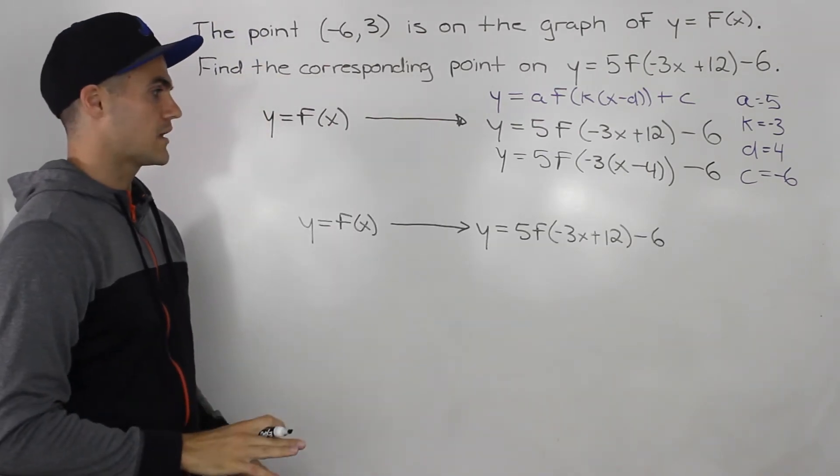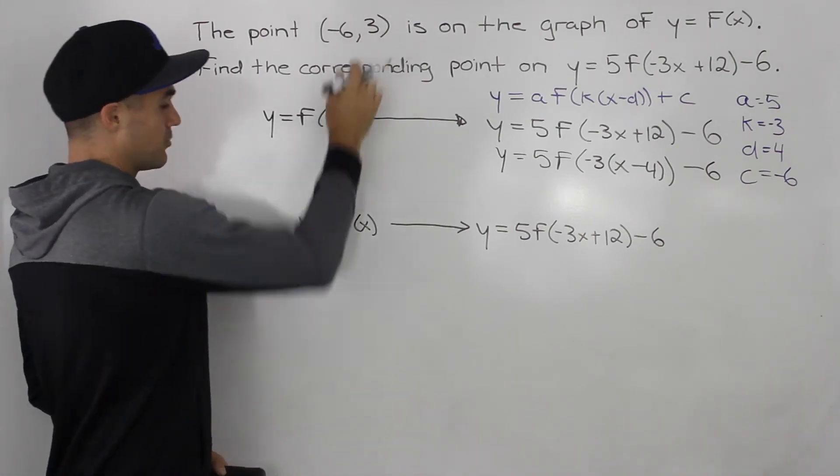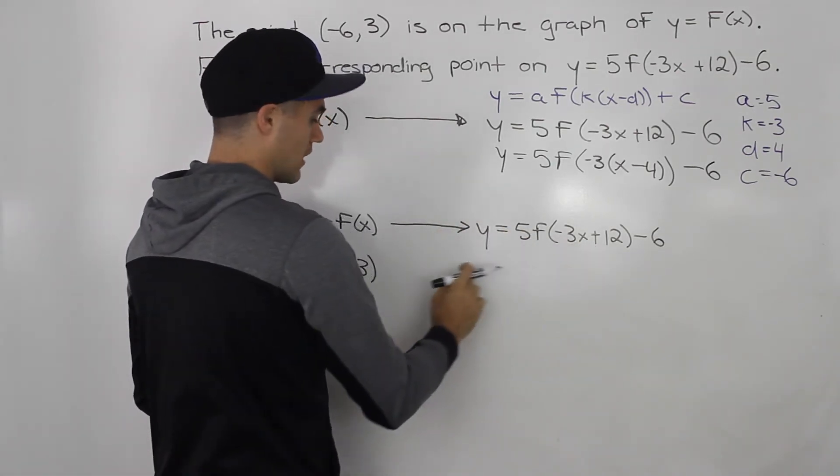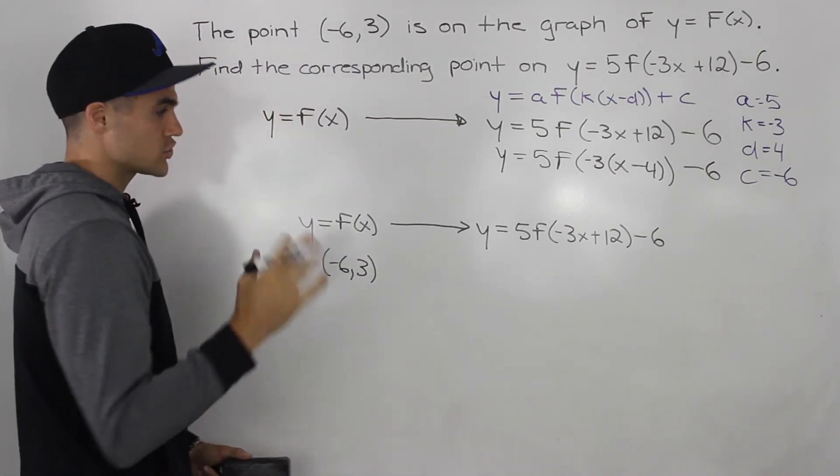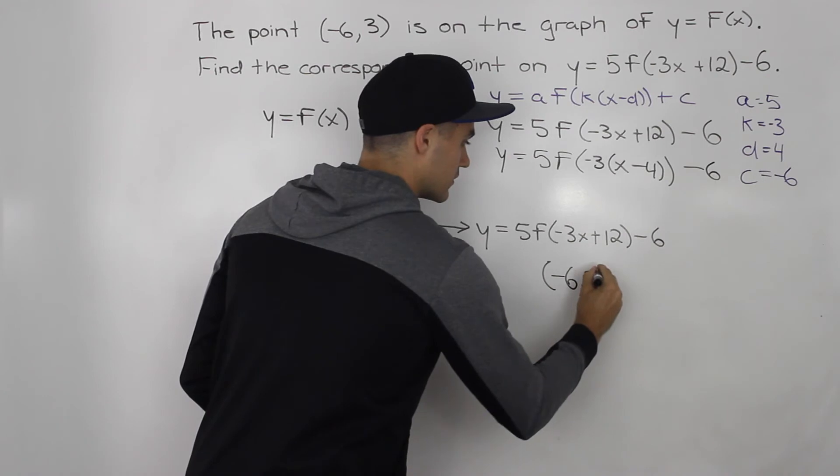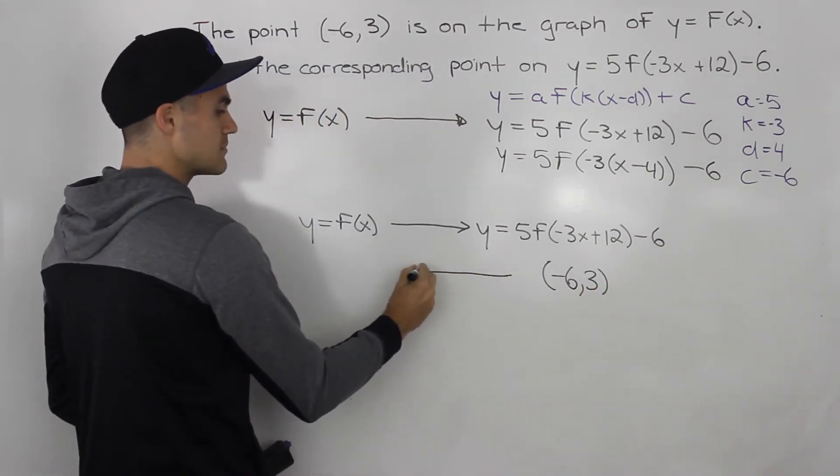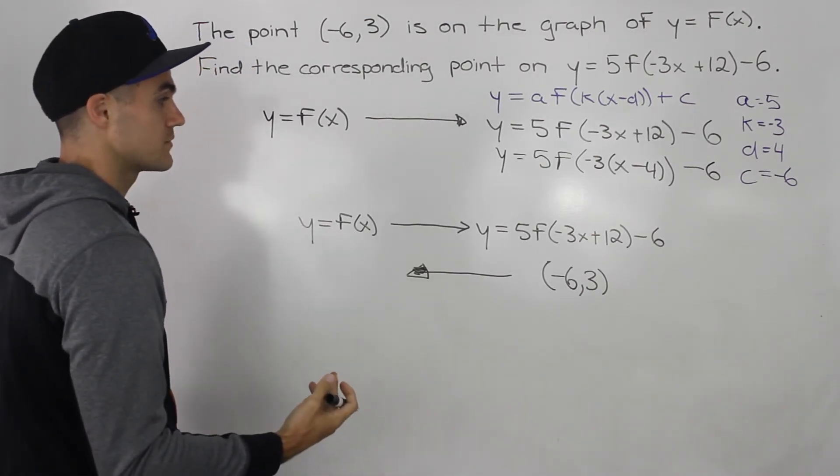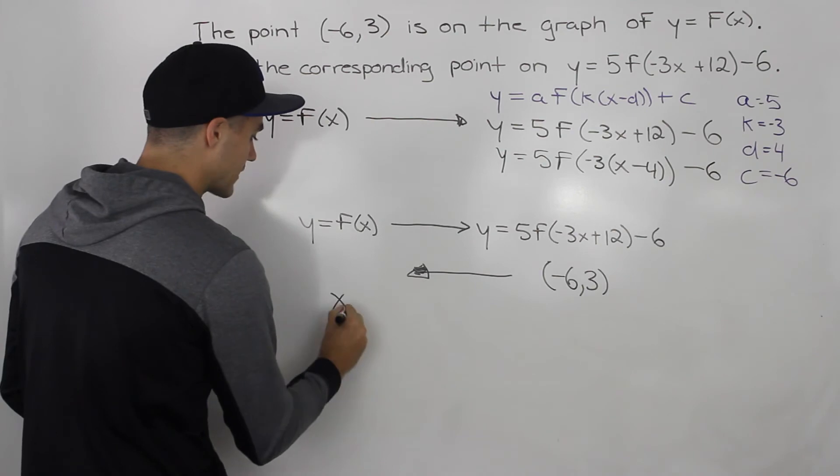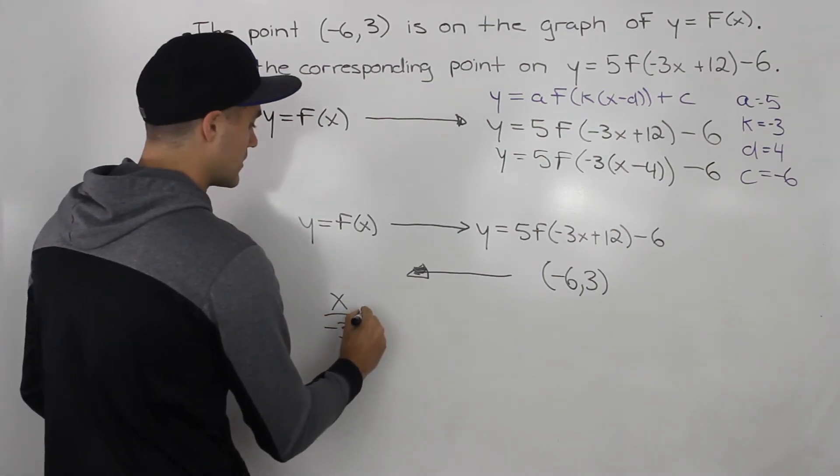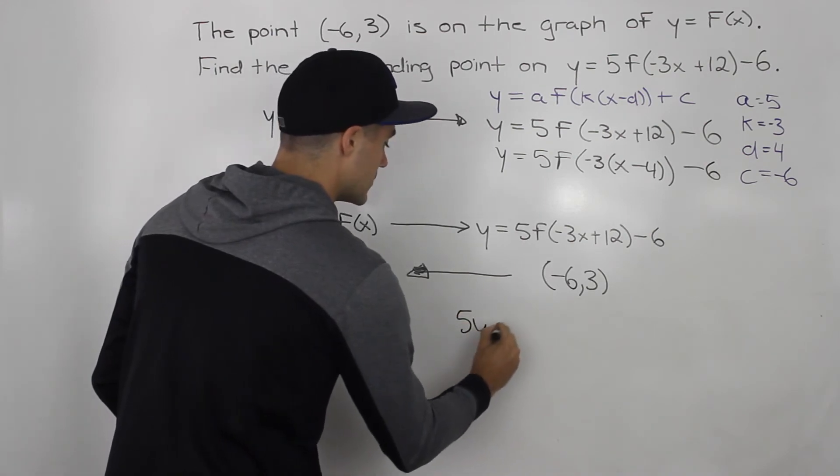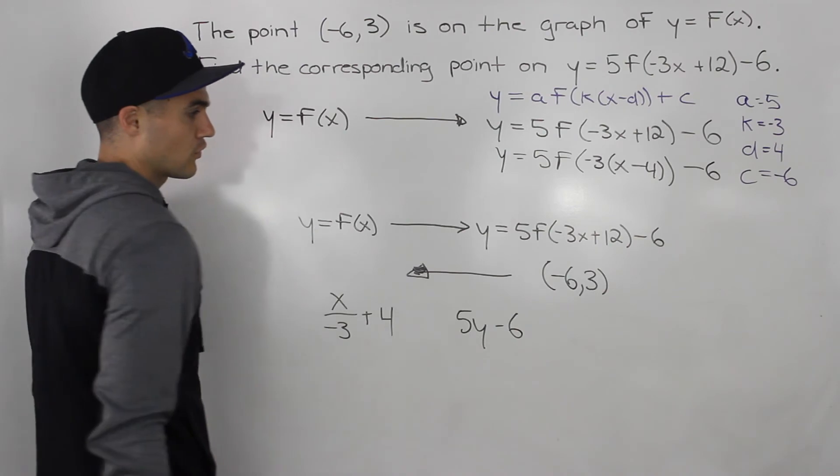Now also a quick point I want to make about this question before finishing off the video is that this point (-6, 3) was on the parent function in this question. And then we have to transform it to the transform function. However, there are questions we went over a question like this, where they can give you the point on the transform function. And then you have to go backwards, you have to find what's the point going to be, what's the original point on the parent function. So the way that would be different is you would still have your formulas, you'd still have the same formula, so you would have x over -3 plus 4 for the x values, right, x/k + d, and then you want to have 5y - 6, ay + c, for the y values.